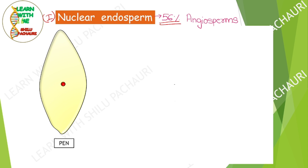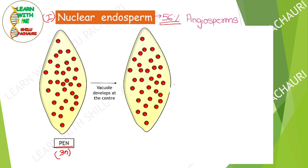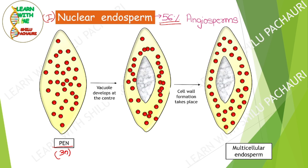In nuclear endosperm, the primary endosperm nucleus, which is triploid, starts dividing mitotically. The nucleus multiplies but cell wall formation does not occur, due to which a large number of free nuclei are produced. After that, a big central vacuole develops at the center, and all these free nuclei are pushed to the peripheral region. Following this, cell walls form around all these nuclei.